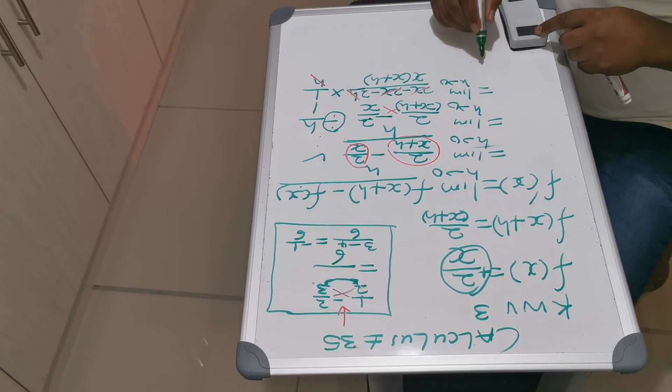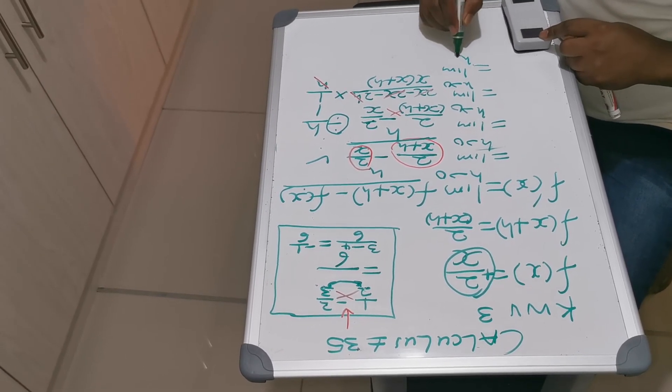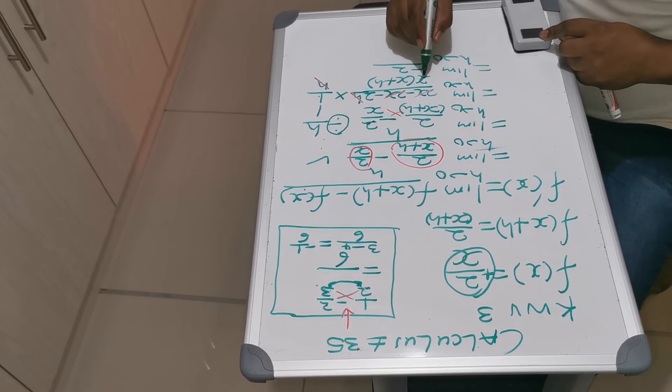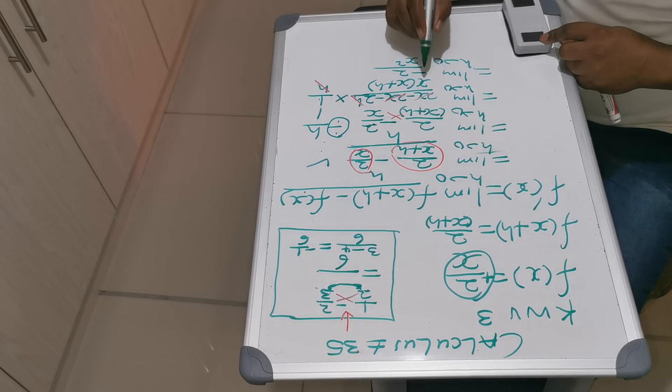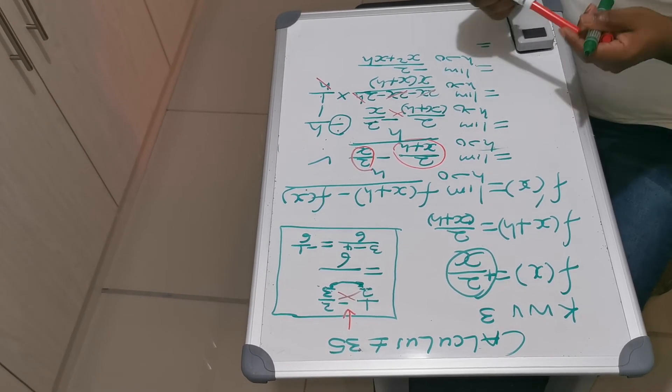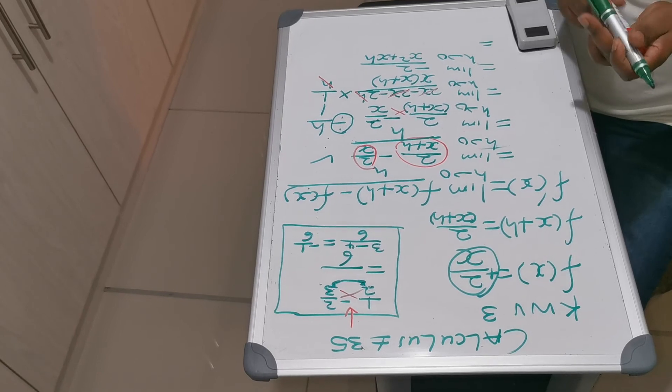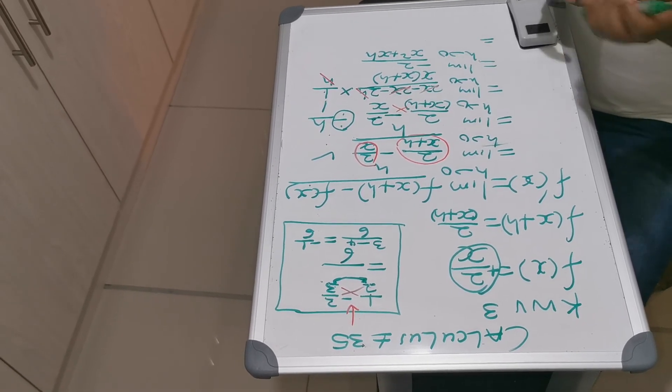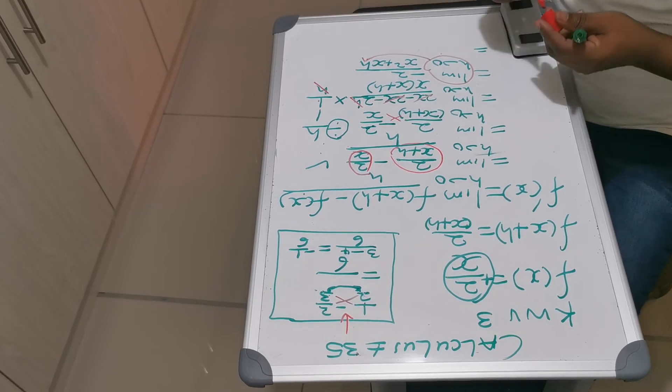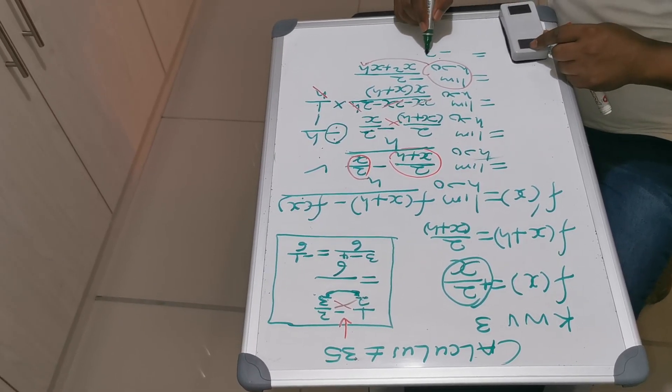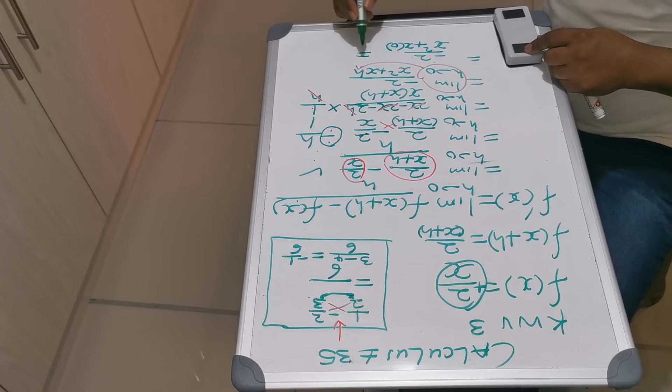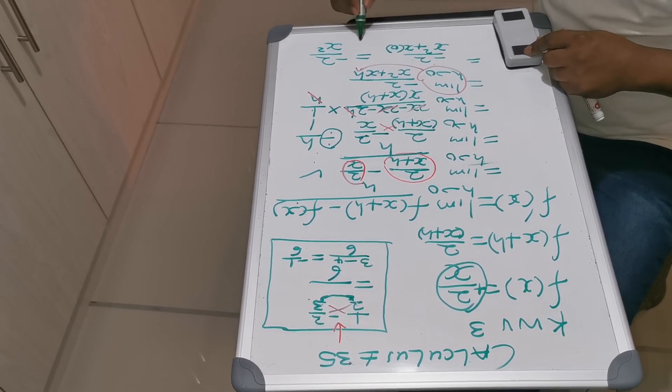Now we are left with limit as H approaches zero. We left with negative 2 times 1, this is negative 2 over, let's remove the brackets, X times X, this is X squared. X times H, this is XH. Where there is H, you put zero. So your final answer will be negative 2 over X squared plus zero, and this will be negative 2 over X squared. That's your final answer.